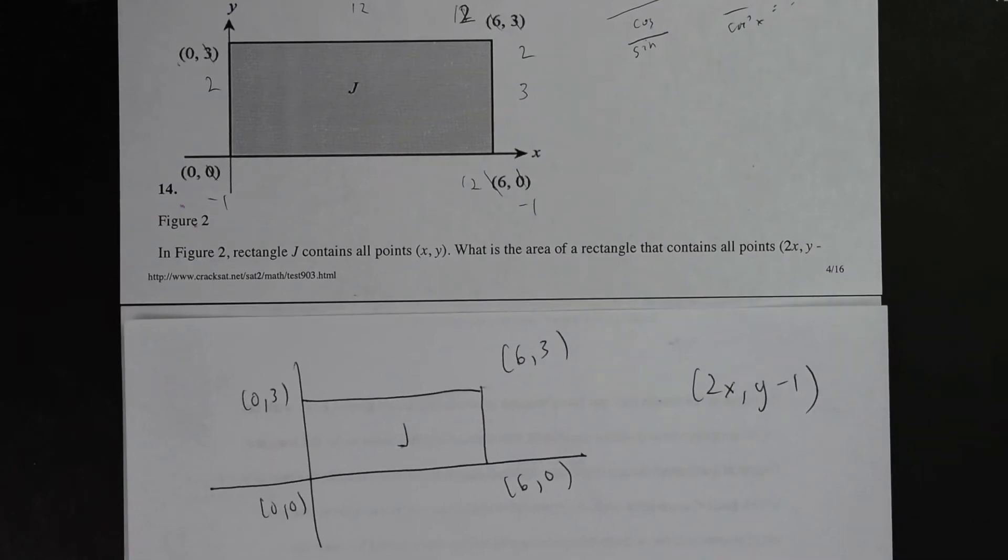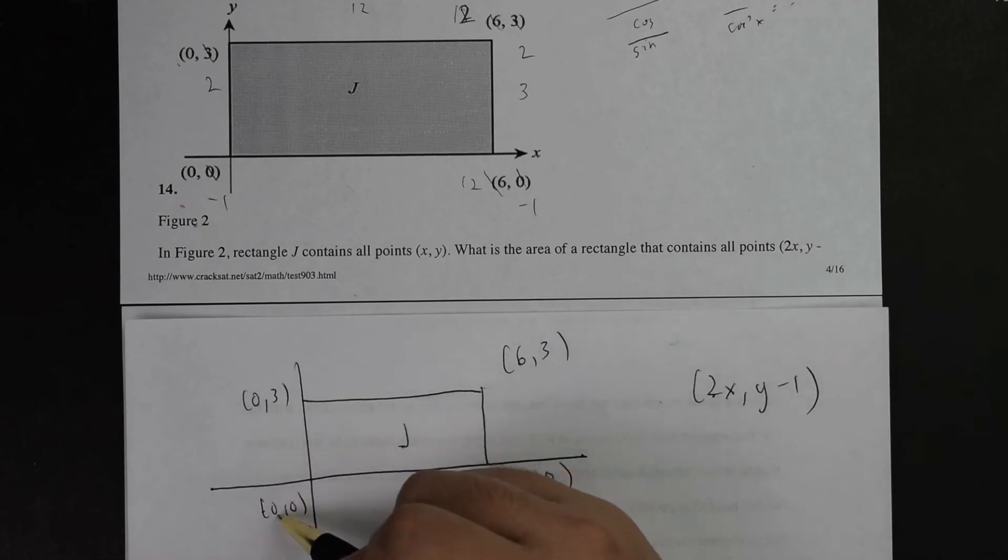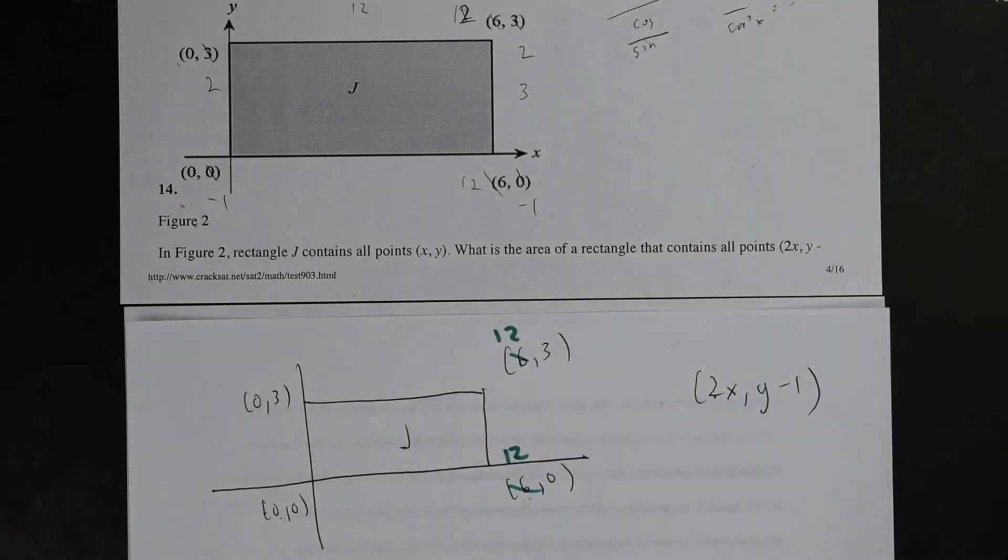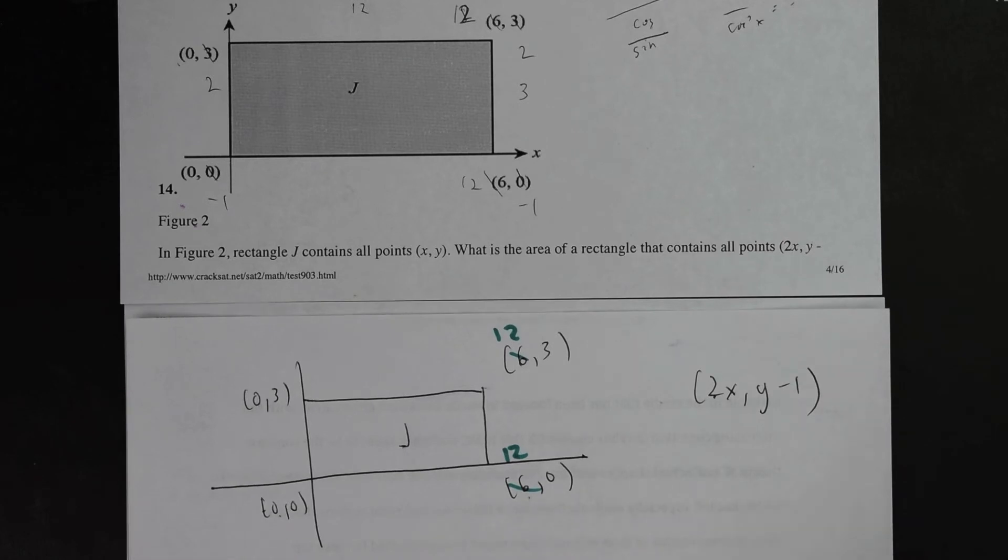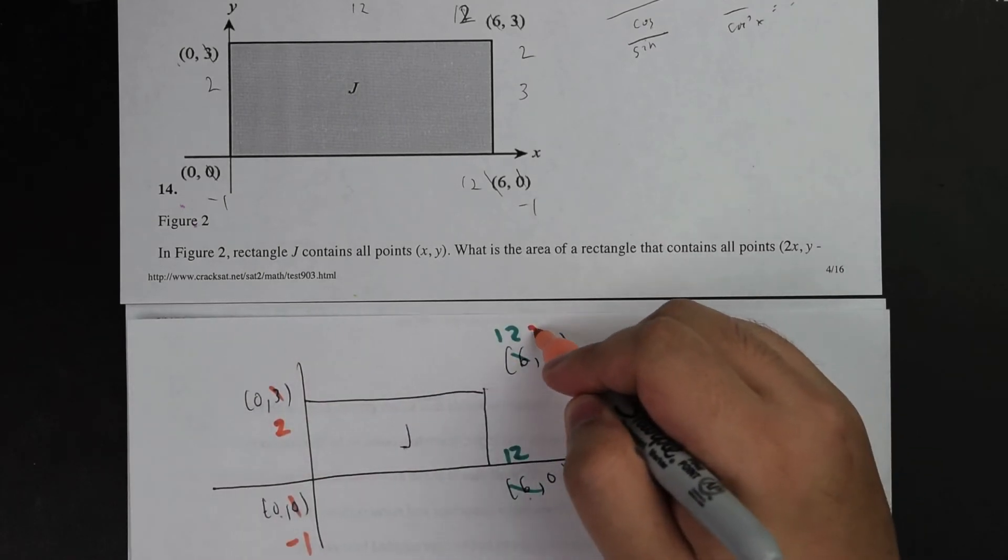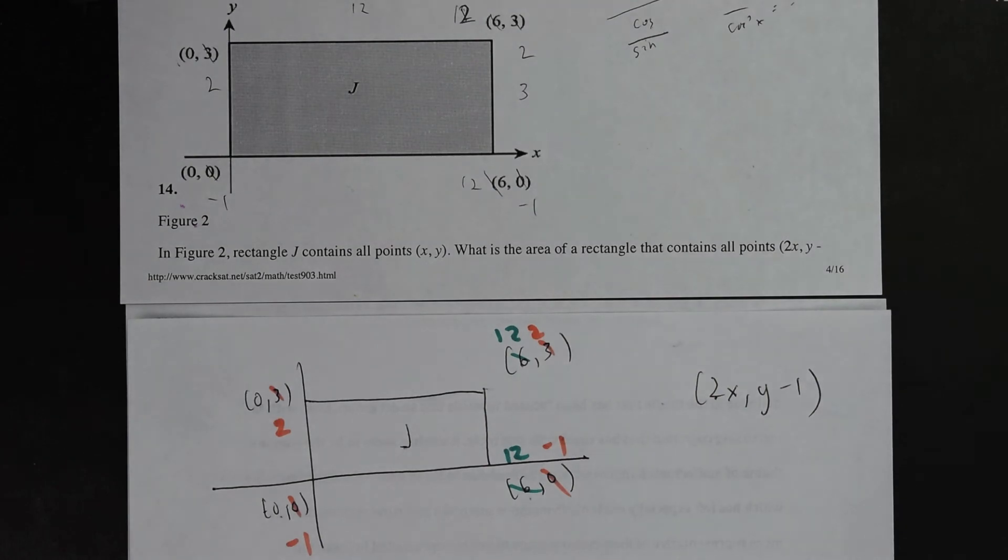This is for x and y. They said what's the area of the rectangle that contains the point 2x, y minus 1. This sort of question is a geometry-based question on areas of rectangle, but it's also about transformations. This means I'm going to take every x coordinate and multiply by 2. 0 times 2 is still 0. 6 times 2 will become 12. That's my first change. Afterwards, if you look at the y coordinate, it says y minus 1. So I must subtract everything by 1. 3 will become 2, 0 will become negative 1.